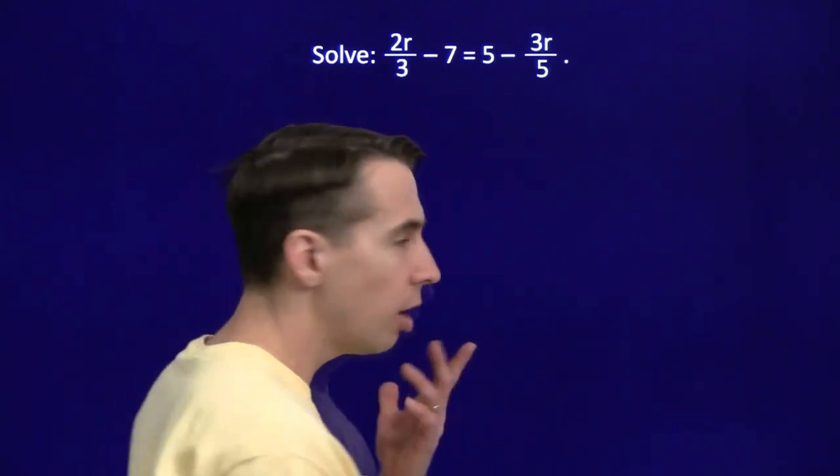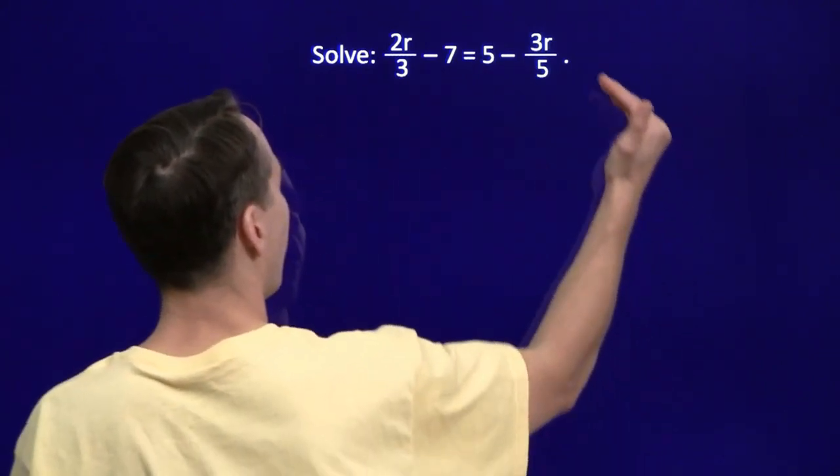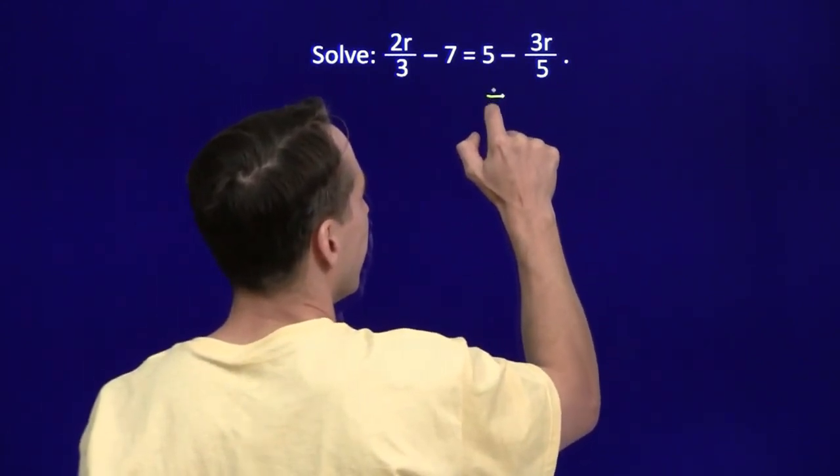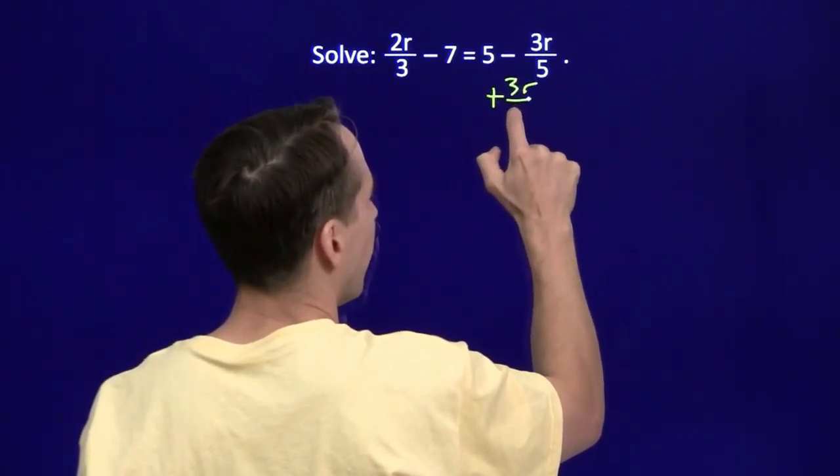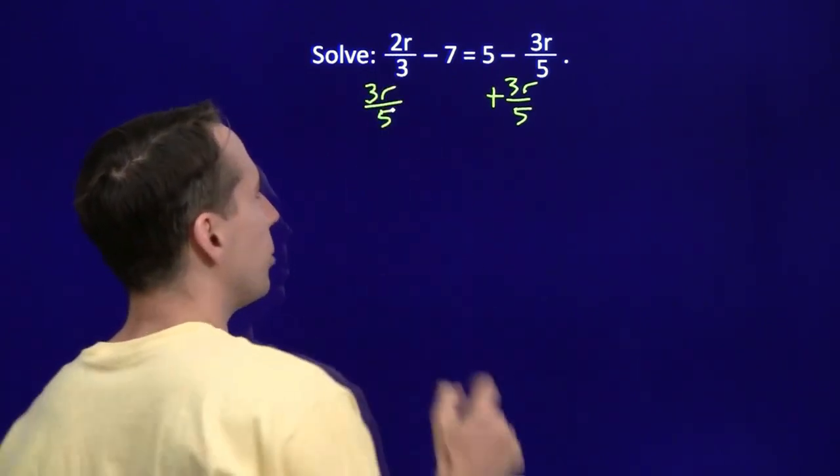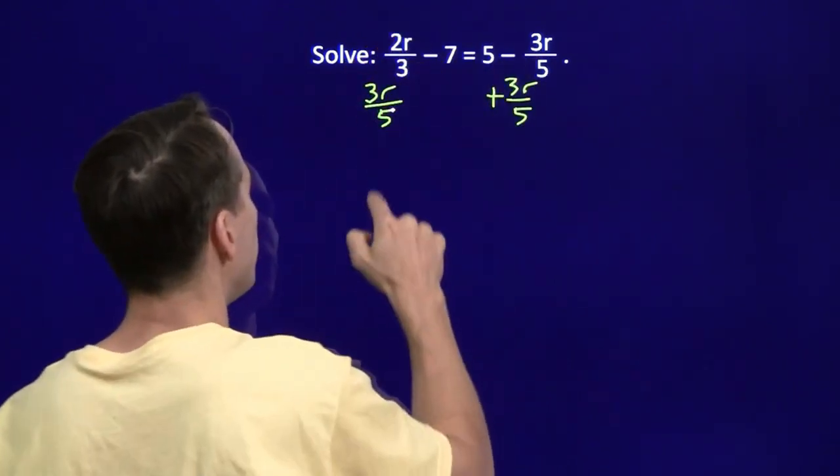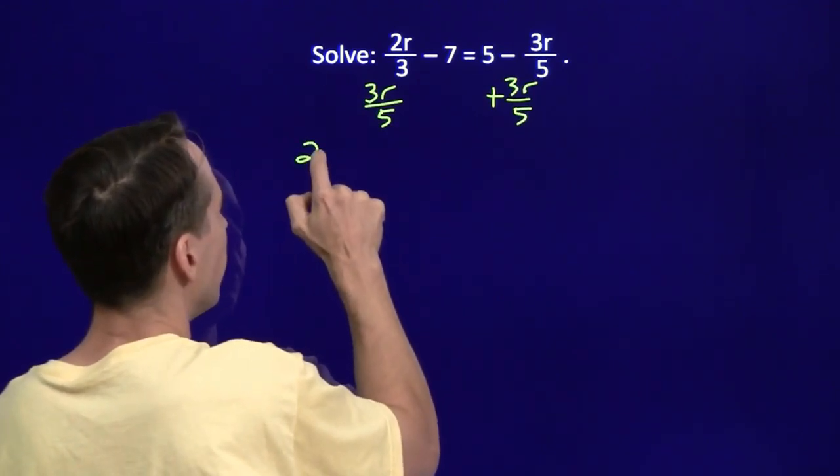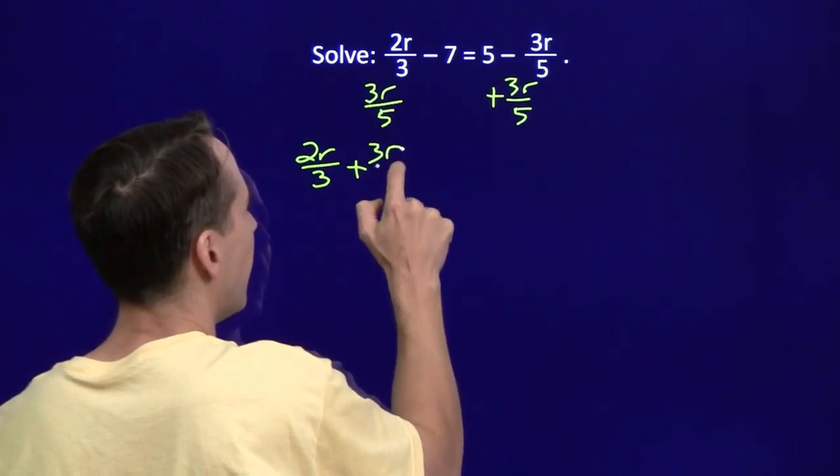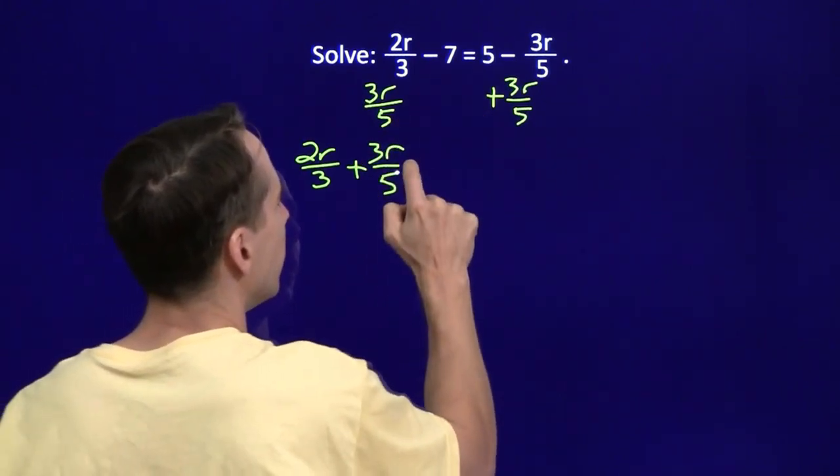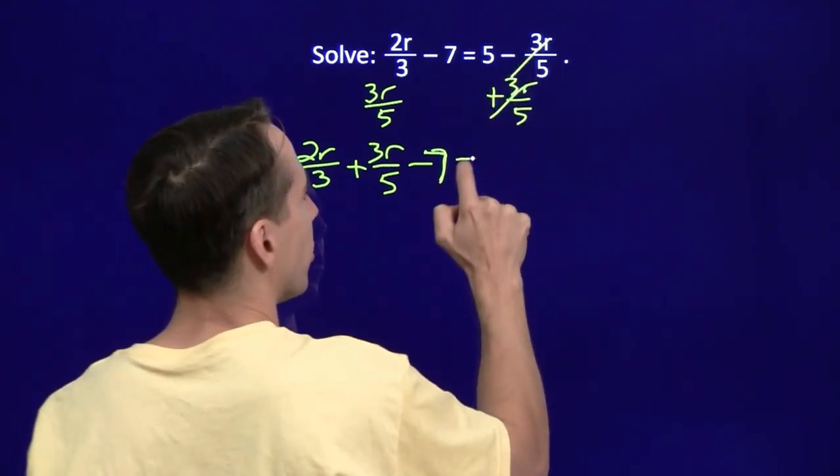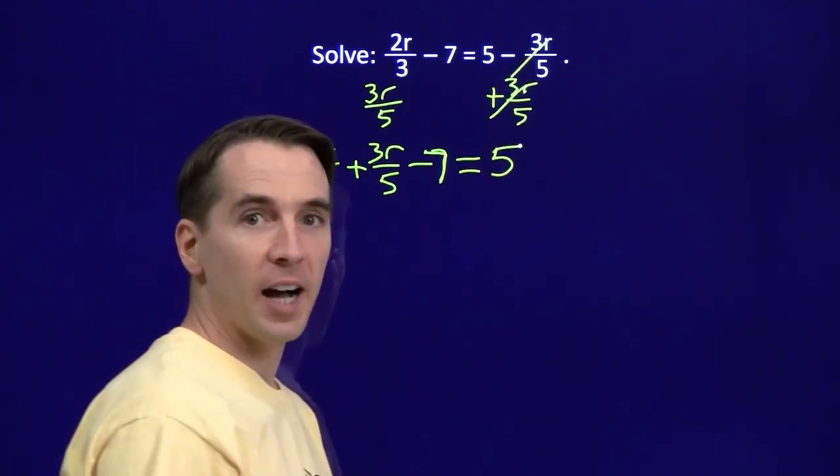So in this problem, we're going to start off just like we usually do. We're going to get all the variables on one side, constants on the other. So we're going to start off by adding 3r over 5 to both sides. And this will get all our variable terms onto one side of the equation. So on the left side here we'll have 2r over 3 plus 3r over 5, minus 7. Of course, these just cancel, so on the right side we're left with 5.